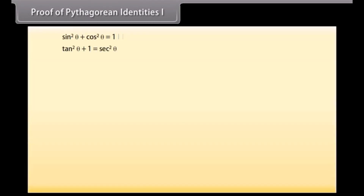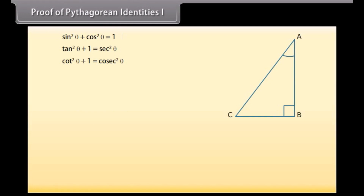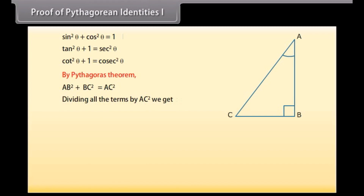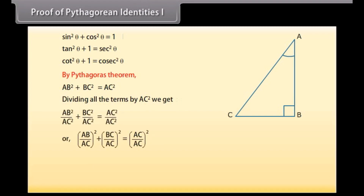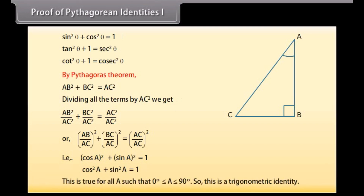Proof of Pythagorean Identity 1: We will prove one Pythagorean identity and use it to prove others. Taking right-angle triangle ABC, by Pythagoras theorem AB squared plus BC squared is equal to AC squared. Dividing each term by AC squared, we get AB over AC squared plus BC over AC squared equals AC over AC squared. That is cos squared A plus sin squared A is equal to 1. This is true for all A such that 0° ≤ A ≤ 90°, so this is a trigonometric identity.